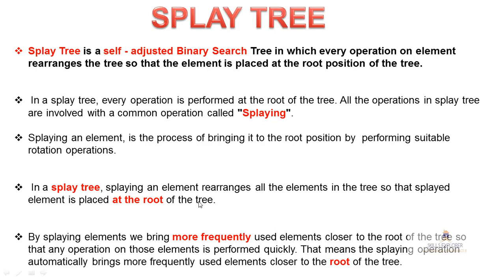By splaying, we bring more frequently used elements to the root position and closer to the root of the tree, so that any operation on those elements is performed quickly. If you bring an element to the root, next time if the same element is required, you get the fastest access, which improves performance. The splaying operation automatically brings more frequently used elements closer to the root.